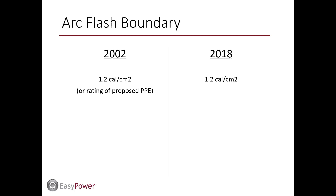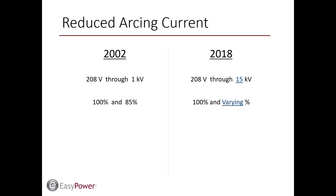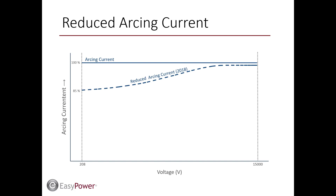Arc flash boundary: incident energy at the arc flash boundary is now fixed at 1.2 calories per centimeter squared. Language from the previous standard indicating an alternate incident energy at the arc flash boundary could be used is now removed. The new guide retains methods to consider reduced arcing currents and their ability to increase arc duration. The variation is revised from a fixed 85% to one that varies based on voltage, with less reduction at higher voltage levels. Previously limited to low voltage equipment, the new arcing current variation correction factor is now applied throughout the entire voltage range.